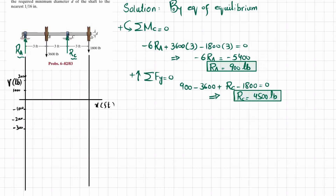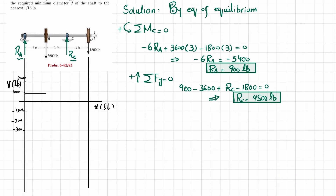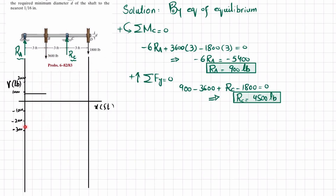At point A we have only Ra, which is 900 pounds. Moving from A to B there is no other force, so the shear force remains at 900 and we draw a horizontal line. At point B there is a load of 3600, so 900 minus 3600 equals minus 2700. The shear force drops to minus 2700. From B to C there is no other force, so it remains at minus 2700.